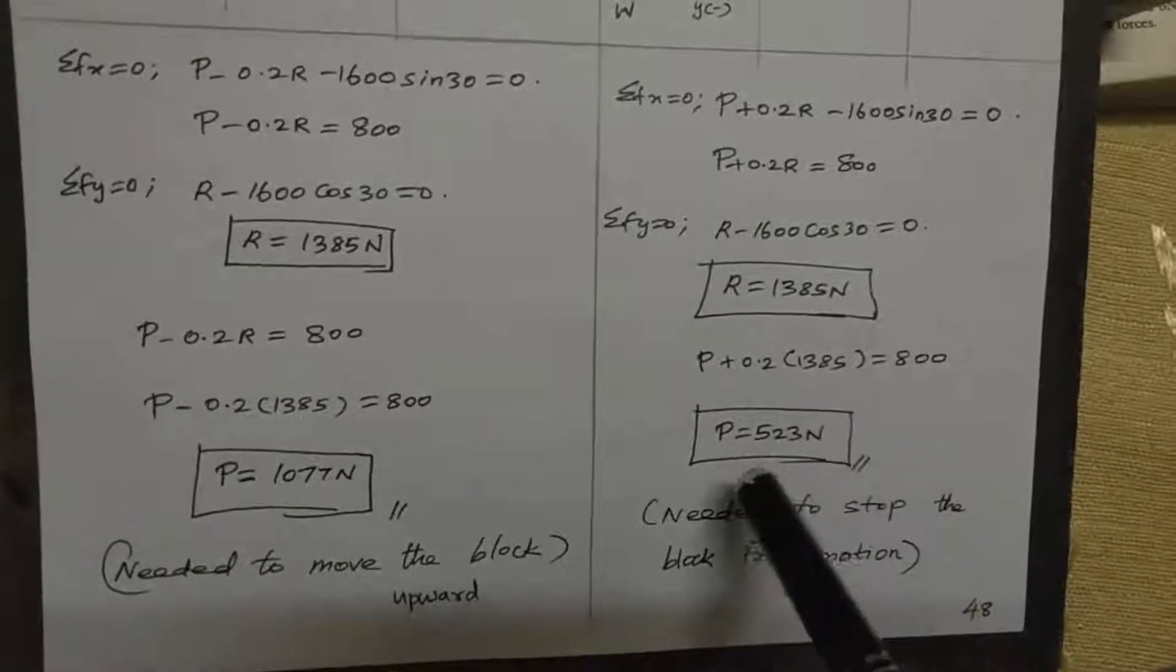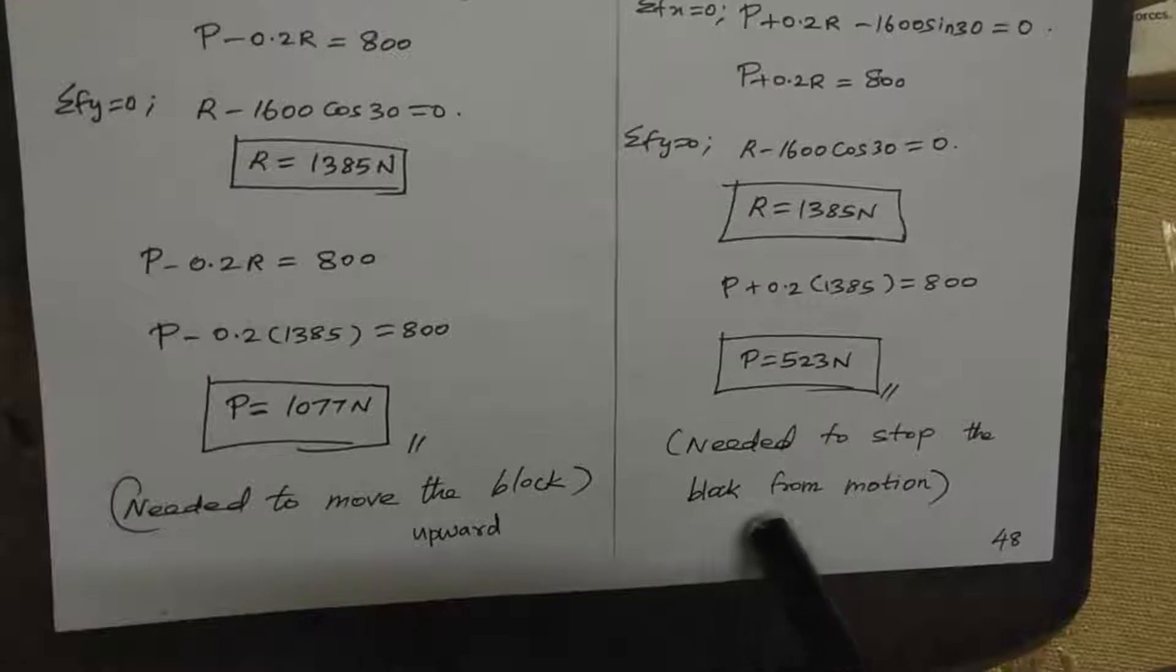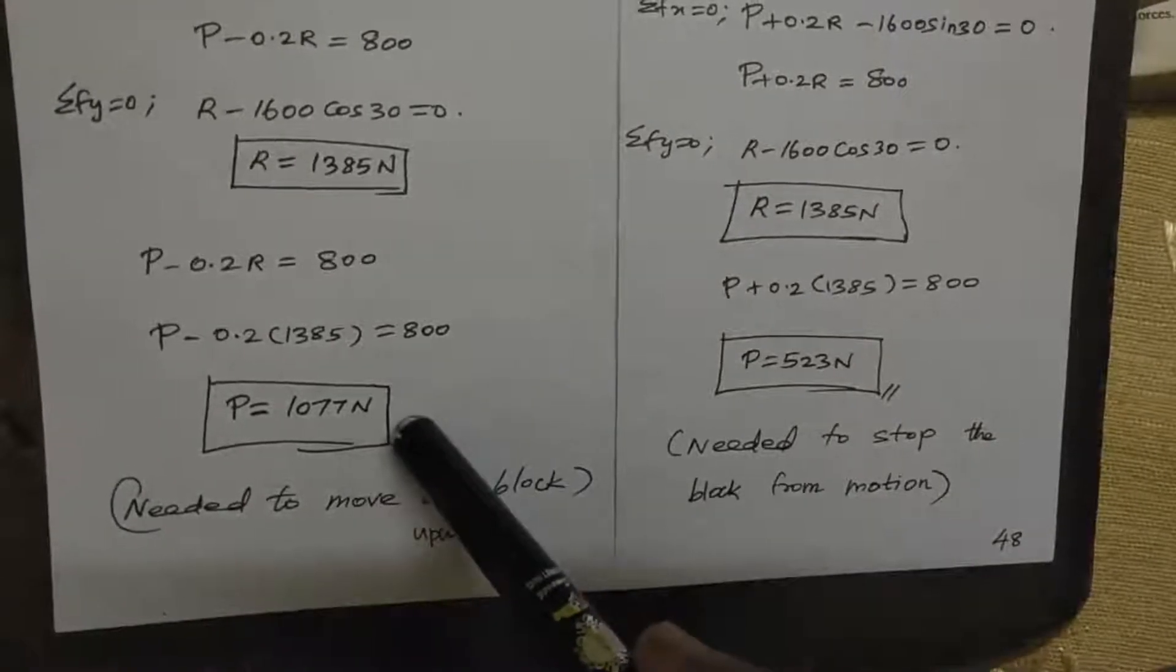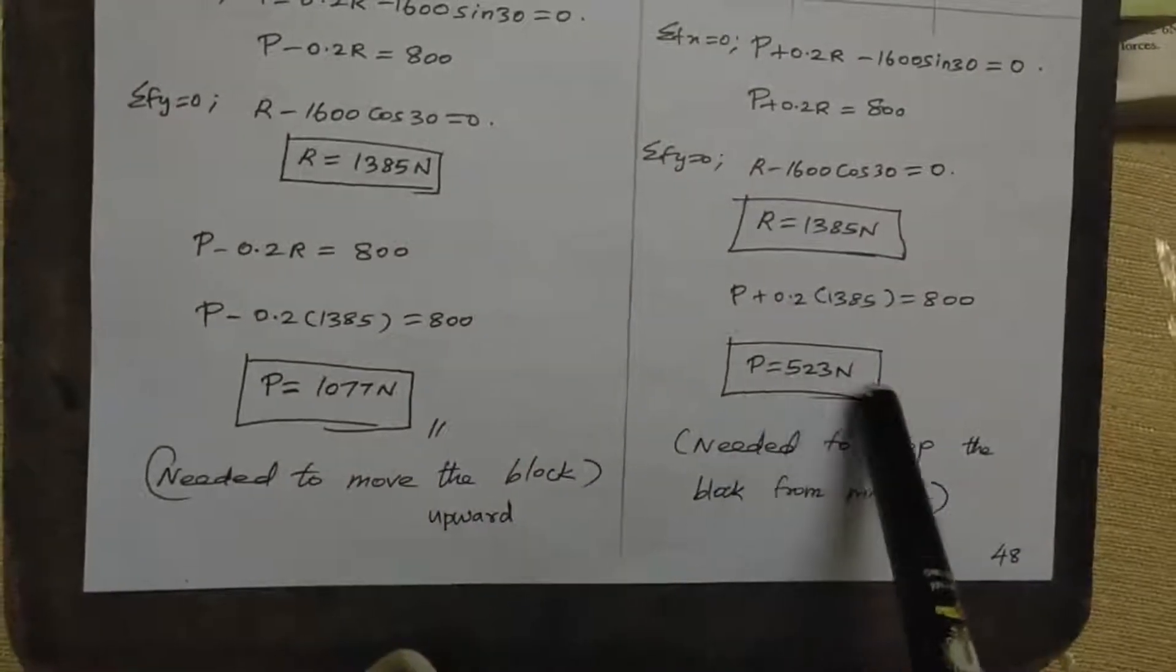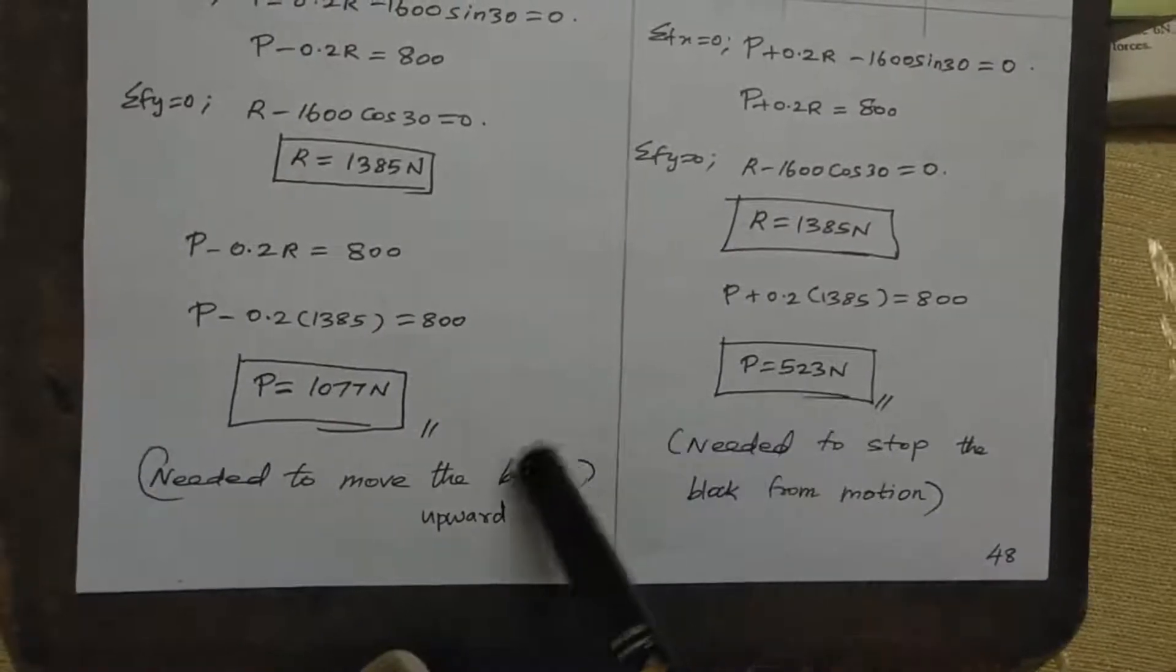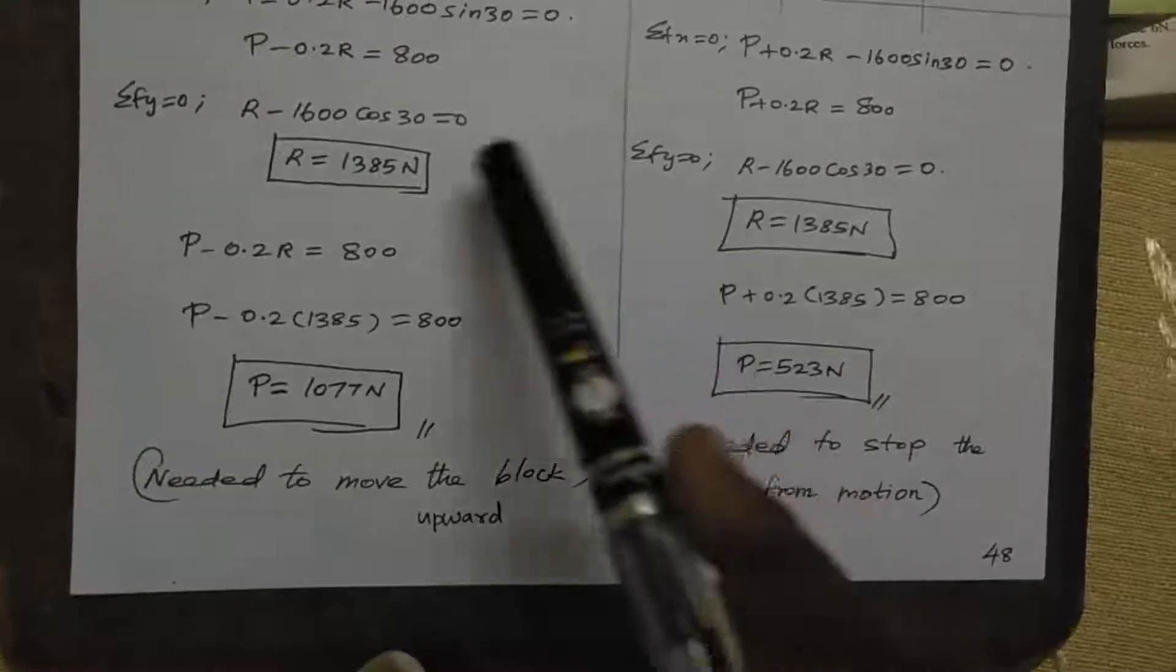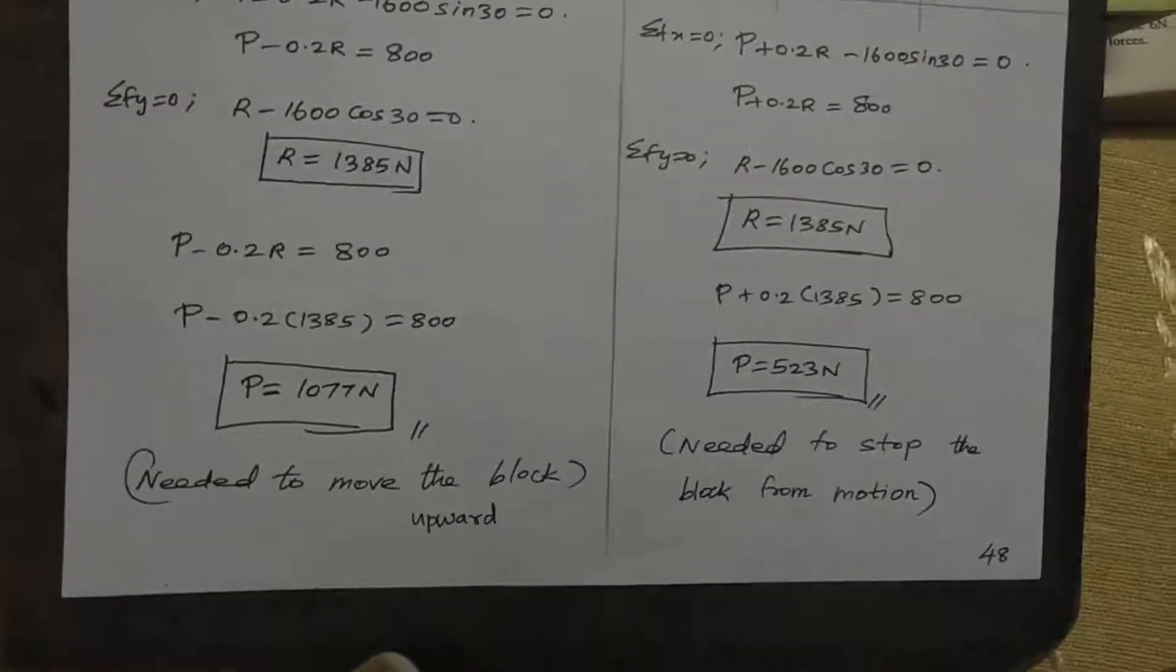The 523 Newtons is the force, the load needed to stop the block from motion downward.